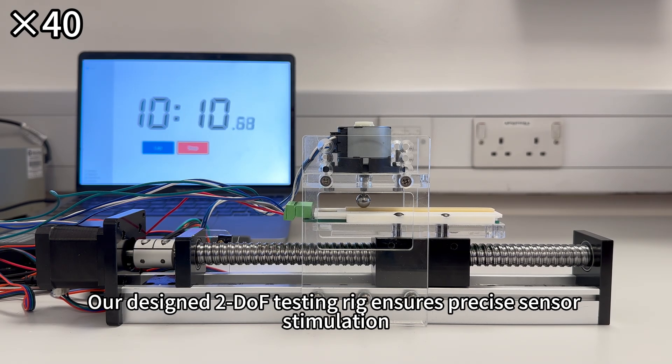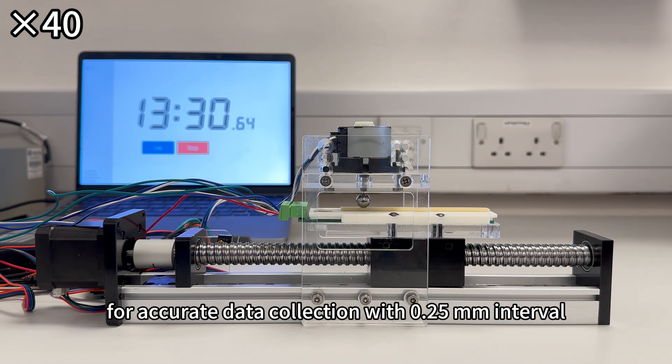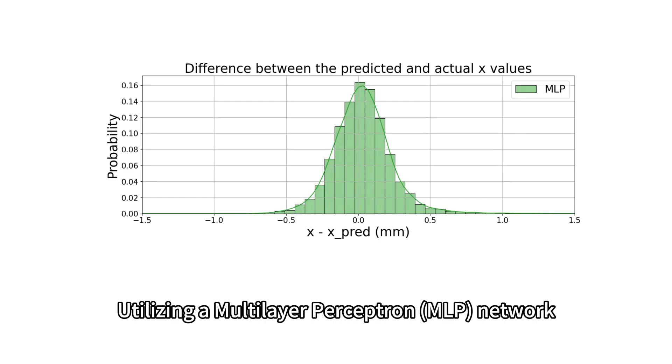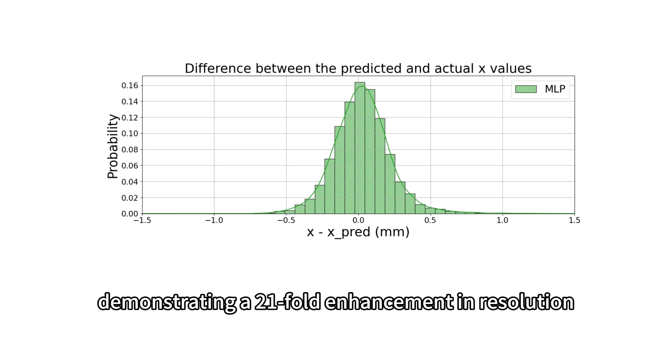Our designed two-door testing rig ensures precise sensor stimulation for accurate data collection with 0.25 mm interval. Utilizing a multi-layer perception network, we enhance the sensor's localization accuracy to 0.284 mm on the testing rig, demonstrating a 21-fold enhancement in resolution.